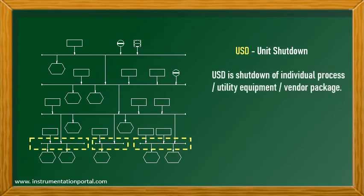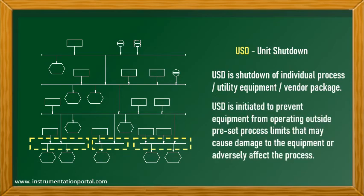USD is the shutdown of individual process or utility equipment, or vendor packages. Unit shutdown is initiated to prevent equipment from operating outside preset process limits that may cause damage to the equipment or adversely affect the process.